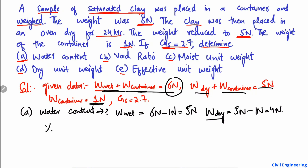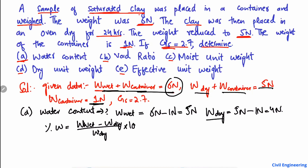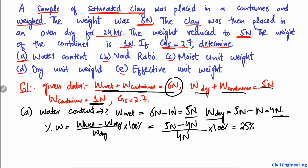After this, we can easily find the percentage water content. Water content equals wet weight minus dry weight, divided by dry weight, multiplied by 100%. So it is (5 Newton minus 4 Newton) divided by 4 Newton, multiplied by 100%, which gives a water content of 25%.